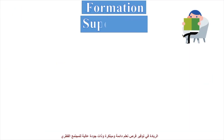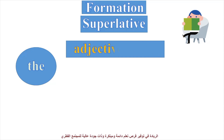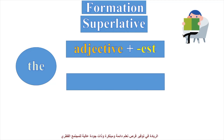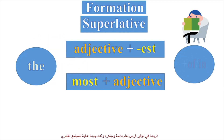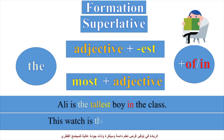Let's go to the formation of superlatives. We begin with the article THE. If the adjective is one syllable, we have to add EST to it. And if the adjective is more than one syllable, we have to write the word MOST before it, and use the prepositions OF or IN. For example, Ali is the tallest boy in the class — tall is a one-syllable adjective, we add EST. Another example: this watch is the most expensive. Expensive is a three-syllable adjective; we write MOST before it.